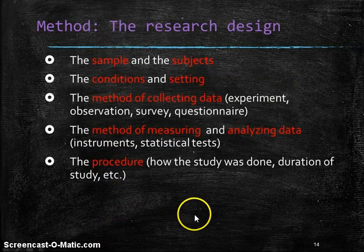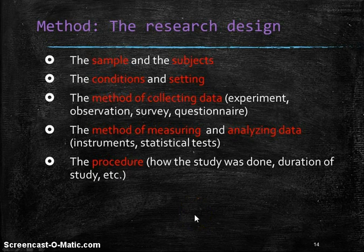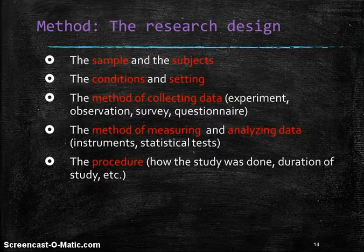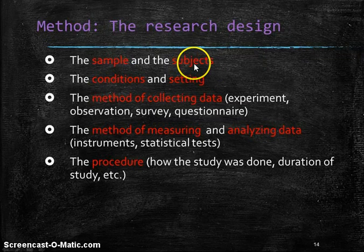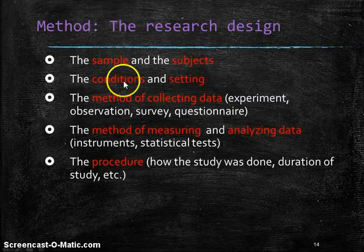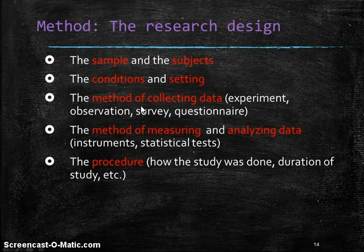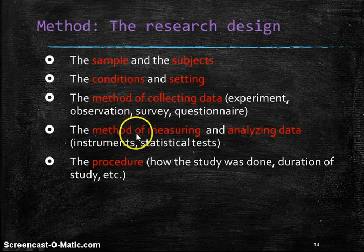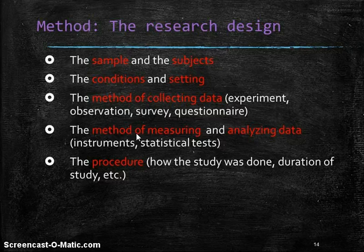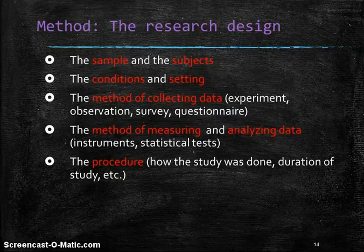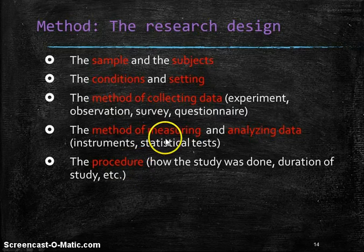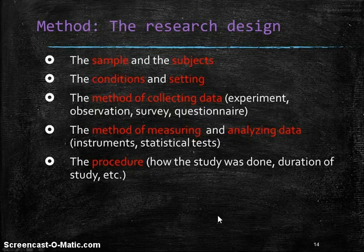The other thing we look at is the method or the research design. How did the authors do their research? Who were their subjects? What was the sample? What were the conditions or the setting of the research? How did they collect data? How are they going to measure or analyze that data? And what exactly did they do? We did first this, then this, then this, then this. This is key information, and it's important to understand in general what was done in the method.